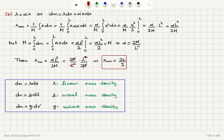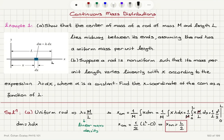For a one-dimensional extended object we use dm equals lambda ds, where lambda is called the linear mass density. For a two-dimensional extended object, dm equals sigma dA, where sigma is the areal mass density. For a three-dimensional extended object, dm equals rho dV, where rho is the volume mass density. We can generalize this to three dimensions.